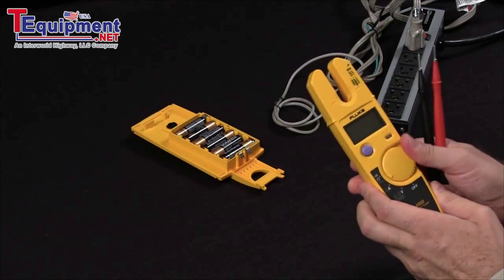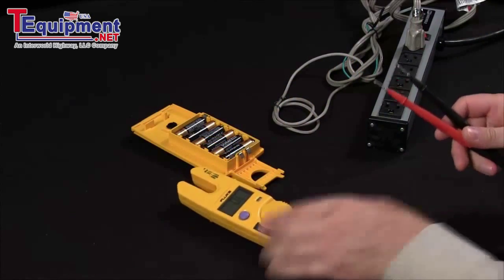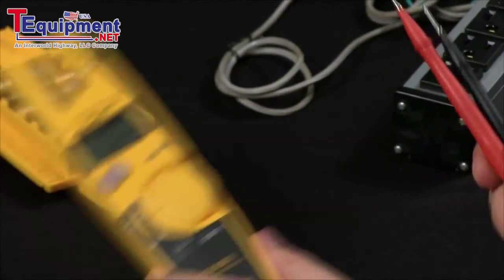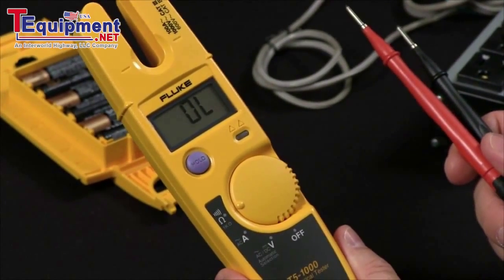Let's start off by making a continuity measurement. All you do is touch your test leads together, showing you that you do have continuity. You can also measure resistance up to 1000 ohms.